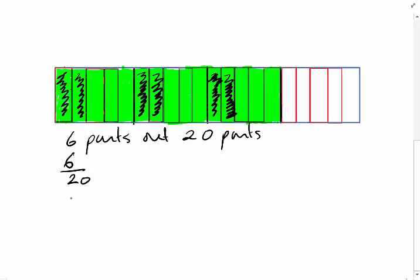So, two fifths times 3 over 4 equals 6 over 20. Notice here, had we multiplied the numerator of the first fraction by the numerator of the second fraction, we could have obtained 6, because 2 times 3 is 6. And had we multiplied the denominator of the first fraction by the denominator of the second fraction, we could have obtained 20, because 5 times 4 is 20.